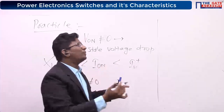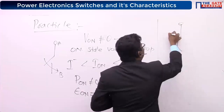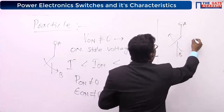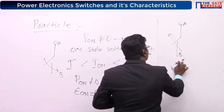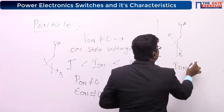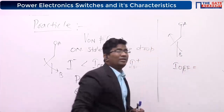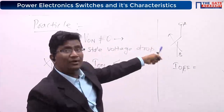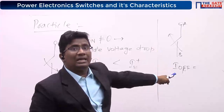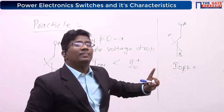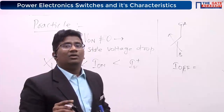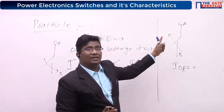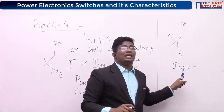Now we will apply the same concept for an open switch. For an open switch — this is A and this is B — what should be the off-state current? Is it zero or not equal to zero? Even though the switch is open, the current flowing through the switch is not equal to zero.